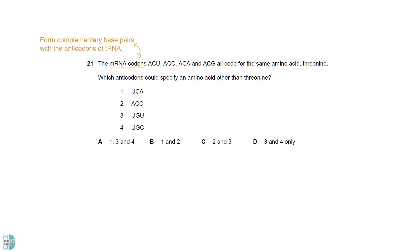mRNA codons form complementary base pairs with the anticodons of tRNA. So, the four codons would pair up with UGA, UGG, UGU, and UGC. 3 and 4 specify threonine, and 1 and 2 do not.